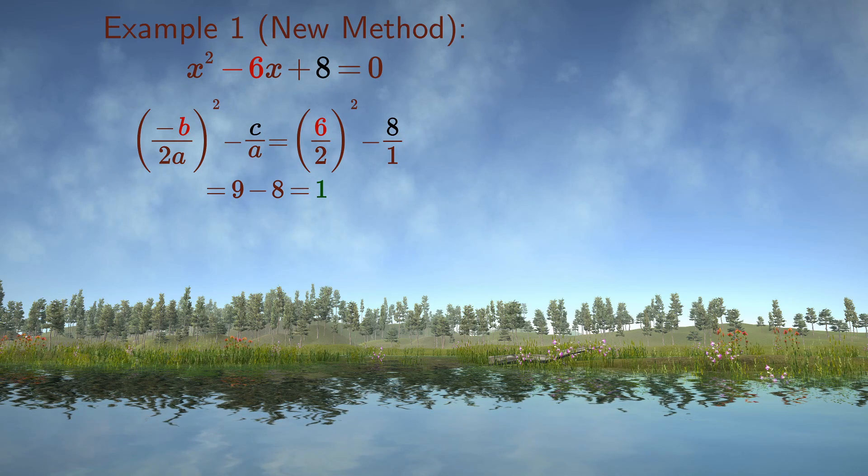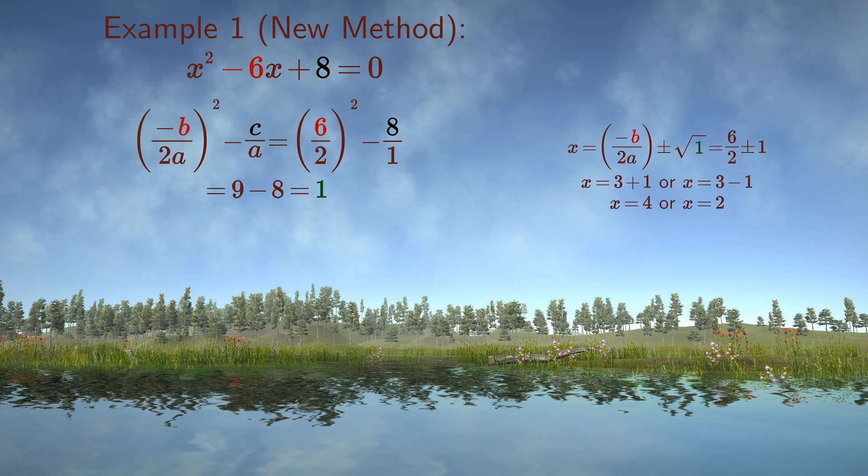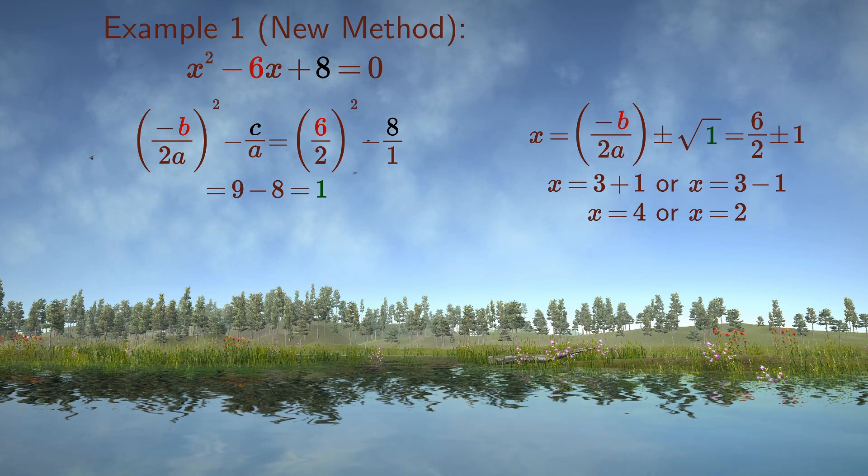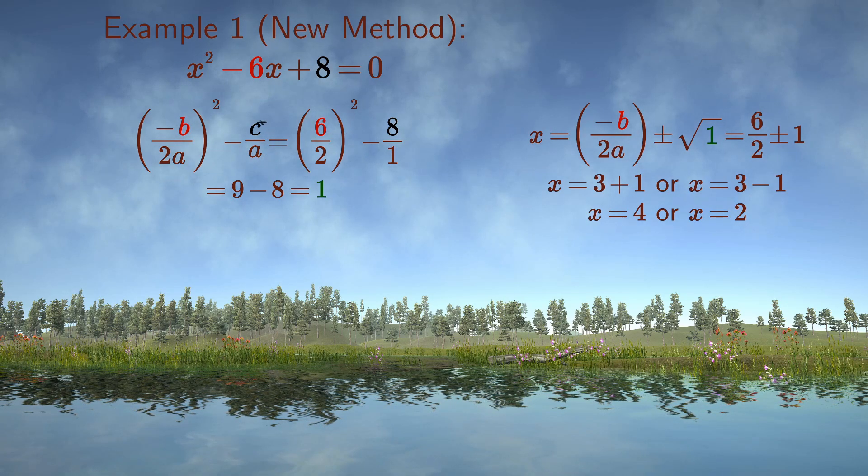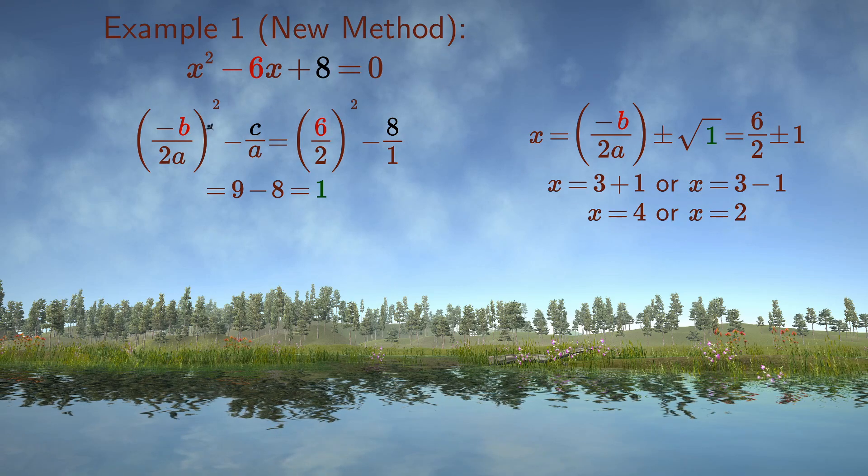We now take the square roots of 1 and add them to the minus b over 2a. The square roots of 1 are plus 1 and minus 1. So the roots of the quadratic equation become 3 plus 1 and 3 minus 1, or 4 and 2.